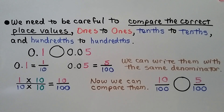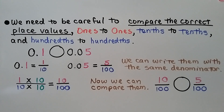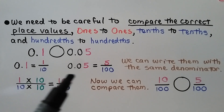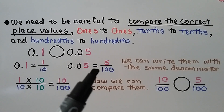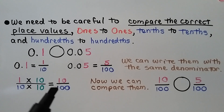We need to be careful to compare the correct place values — ones to ones, tenths to tenths, and hundredths to hundredths. We have one tenth and need to compare it to five hundredths. We can write them with the same denominator: one tenth has a numerator of one and a denominator of ten; five hundredths has a numerator of five and a denominator of one hundred.